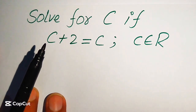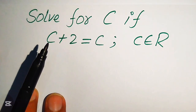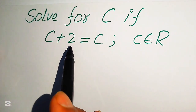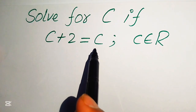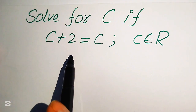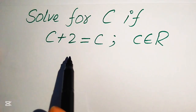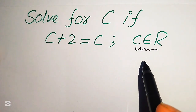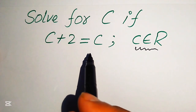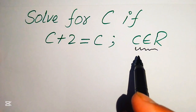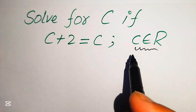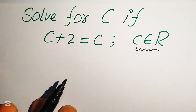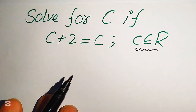Hello everyone, today I want to show you how to solve this problem for the values of c, if we have c plus 2 equals c, and we solve this problem for all the values of c. Here, remember that c must belong to R, meaning we need to solve this for the real values. I hope you like this method, but if you have any other method in mind, please don't hesitate to write it in the comment section.